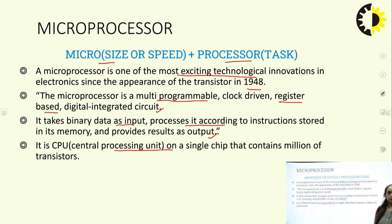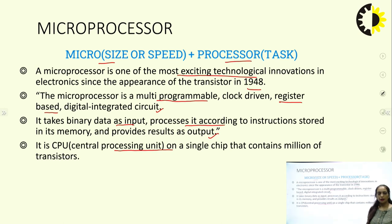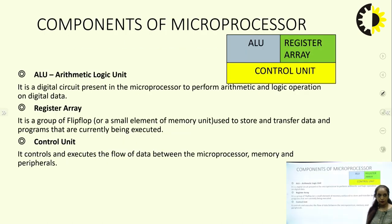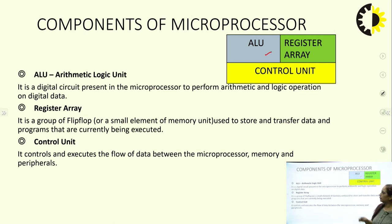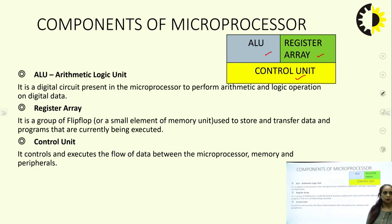You must have seen the specifications of your mobile or laptop — the processor type and its speed — all these things are related to the microprocessor. The basic components of a microprocessor are: ALU (Arithmetic and Logical Unit), a register array to store n number of bits, and a control unit — these are the three important parts.